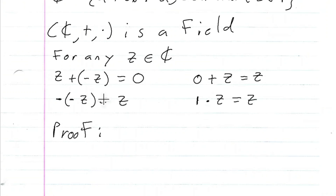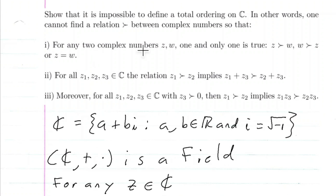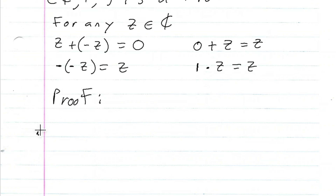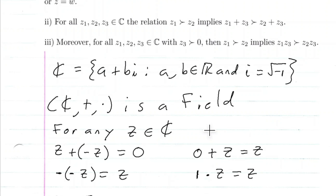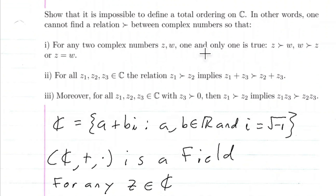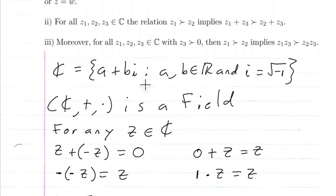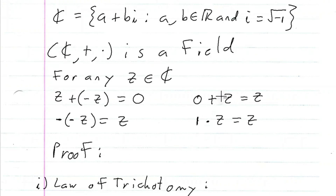For a total ordering, all three conditions must be satisfied. I'm going to look at the first one — the law of trichotomy. I need to find two complex numbers where all three relationships fail, so I'm going to look at the specific ones: zero and i.